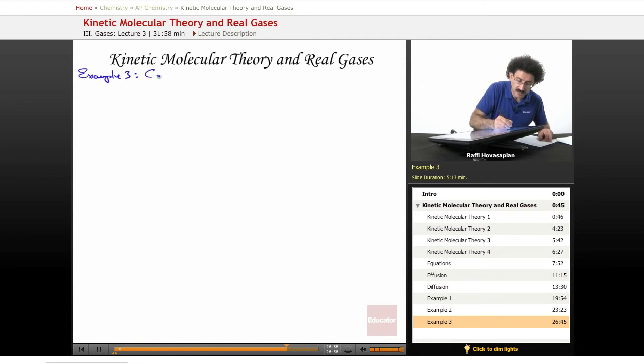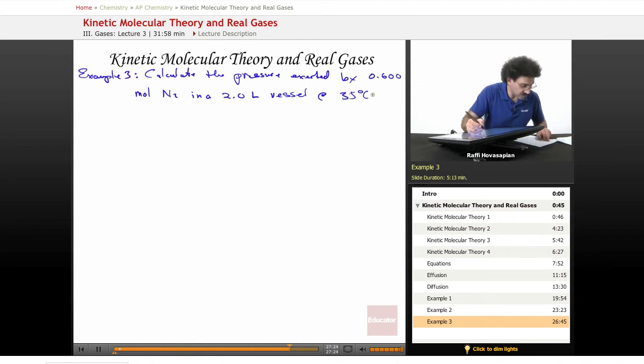It says calculate the pressure exerted by 0.600 moles of nitrogen gas in a 2.0 liter vessel at 35 degrees Celsius using A, the ideal gas law, PV equals nRT, and B, the van der Waals equation.